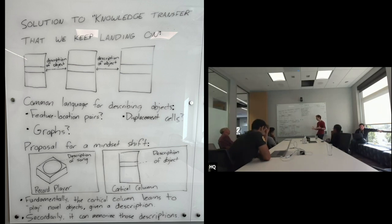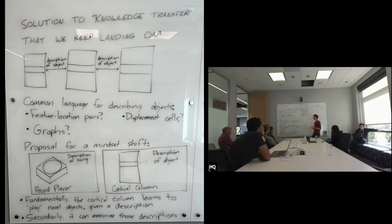Secondarily — importantly, but secondarily in terms of the learning problem — it can memorize those descriptions. Once you have some activation pattern here that describes an object, memorizing a particular coffee cup is a straightforward problem. The difficult, advanced problem it's solving is learning the language for expressing the objects.